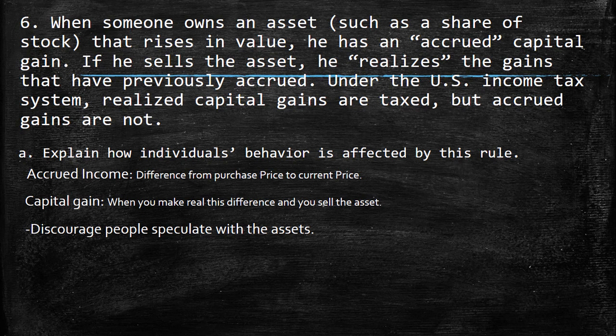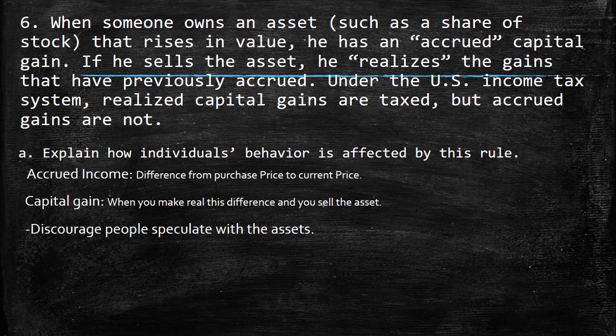How does this rule affect behavior? Basically, on first instance, it discourages people from speculating with assets. Because when you buy and sell on the same day, you are not only thinking about the gain from purchasing and selling, but you also need to take into account the cost of transaction, including the tax. So something that was going to be a gain won't be anymore, because you need to pay taxes.